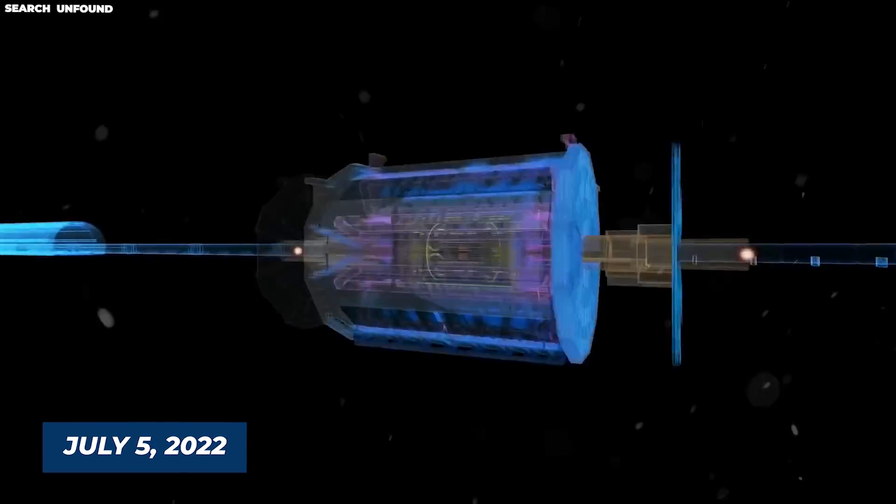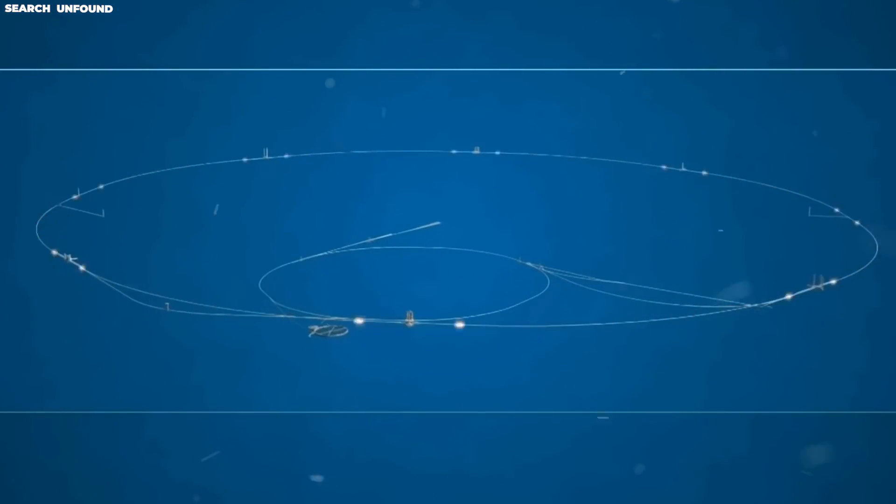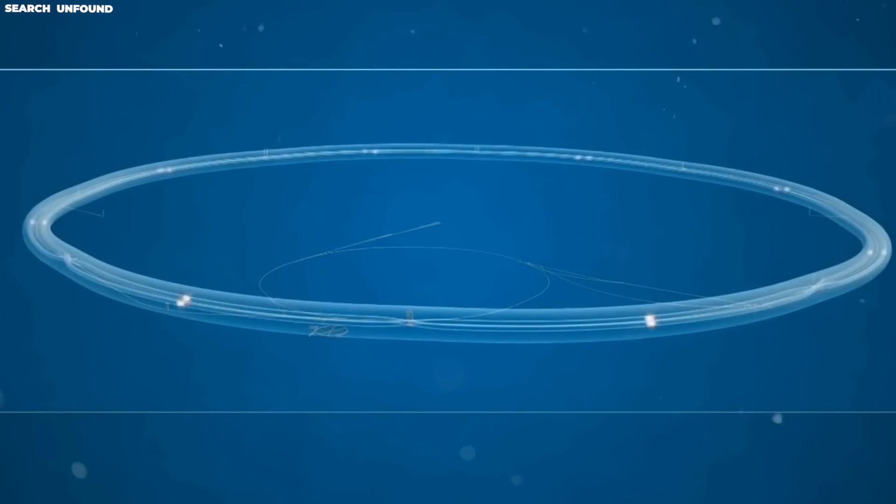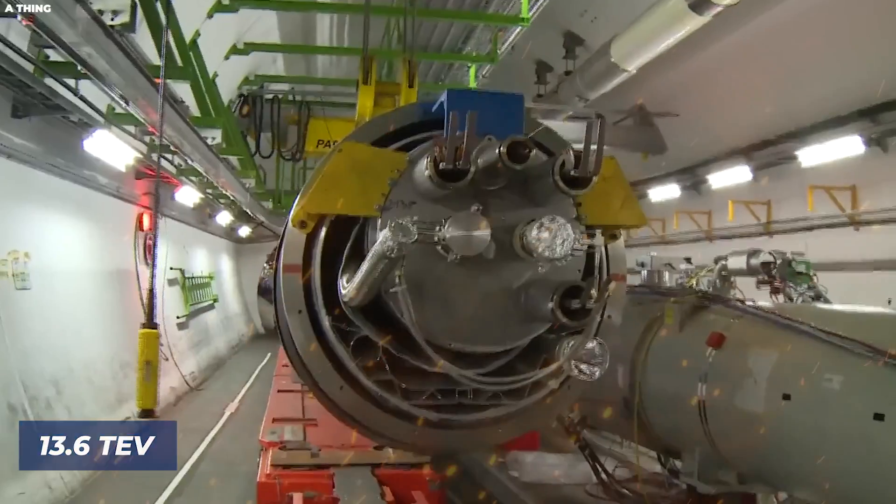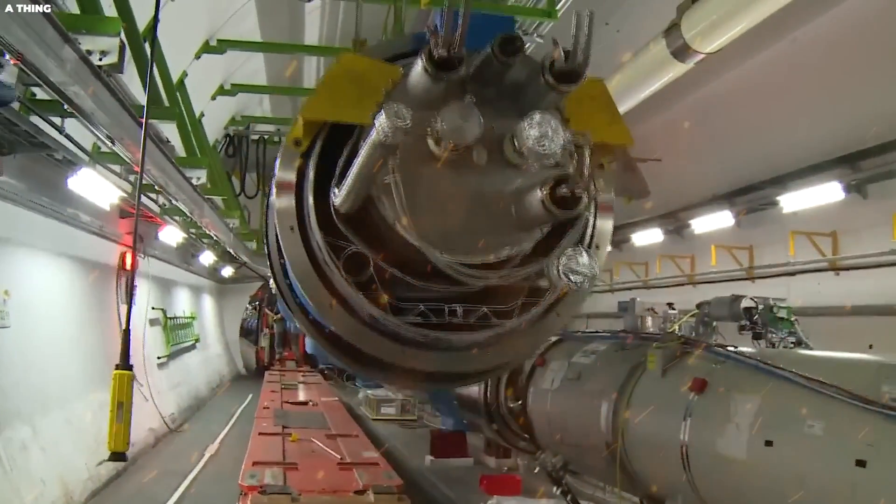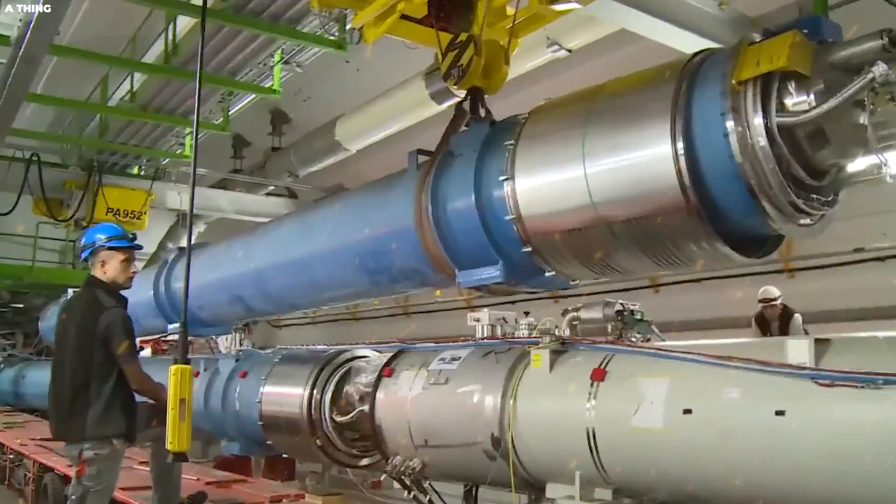On July 5, 2022, the LHC detector switched on all subsystems and started recording high-energy collisions at the unprecedented energy of 13.6 teravolts. This accomplishment was made possible by the operators who had worked around the clock since the start of the LHC last April.